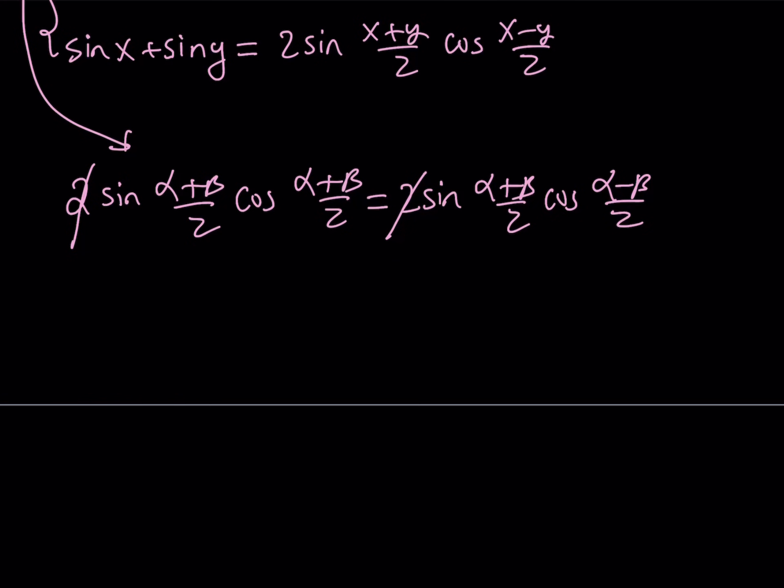Put everything on the same side and factor. You can take out sine alpha plus beta over 2, and then inside you're going to have the difference of 2 cosines. Obviously, there's a formula for that, but I'm not going to use it. The product is 0.